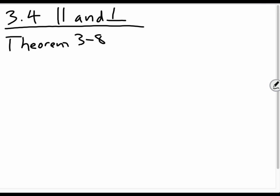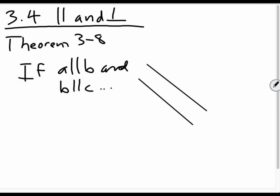Theorem 3-8. Okay, but it says if A is parallel to B and B is parallel to C. Okay. And let me just draw this out. Whoops. So if this is A, this is B, and this is C.